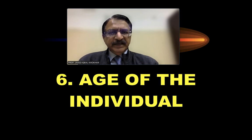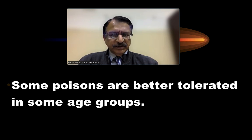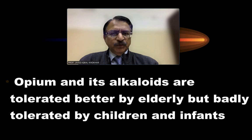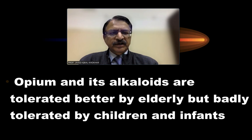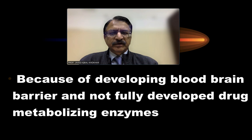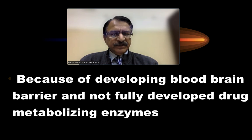Regarding the age of the individual, some poisons are better tolerated in certain age groups. Opium is better tolerated by the elderly but badly tolerated by children and infants, because of their developing blood-brain barrier and not fully developed drug-metabolizing enzymes, making it fatal in children.